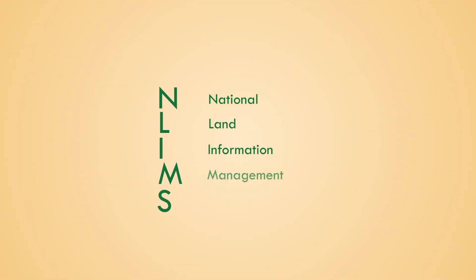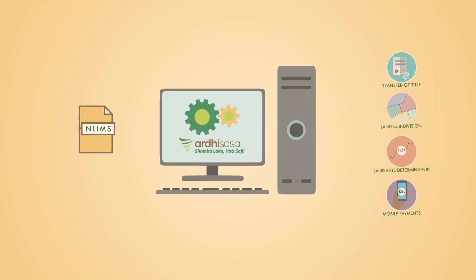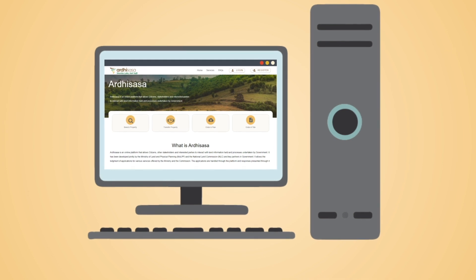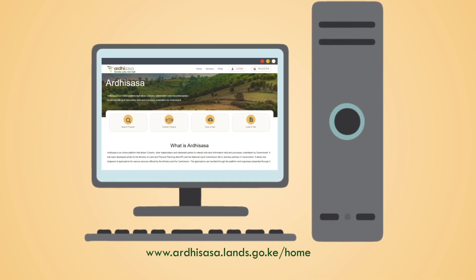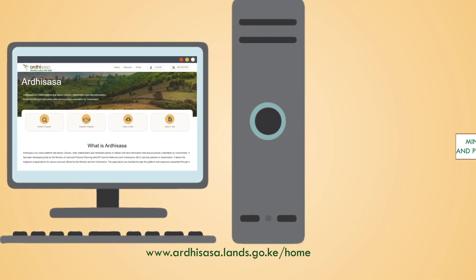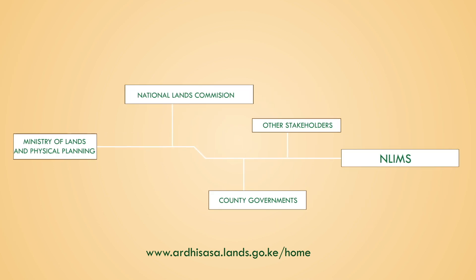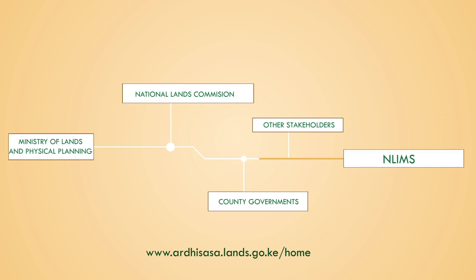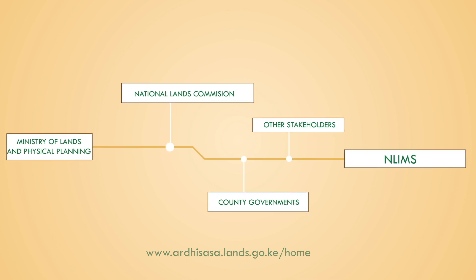The National Land Information Management System, NLIMS, is an online platform that allows the processing and management of data on land transactions. NLIMS is a digital platform hosted on ardisasa.lands.go.ke and developed by the Ministry of Lands and Physical Planning in consultation with the National Lands Commission, county governments and other stakeholders for Kenyans and by Kenyans.